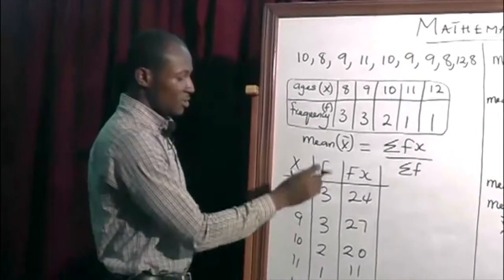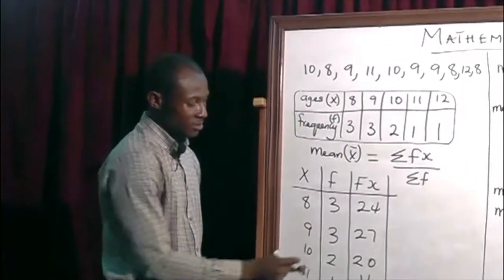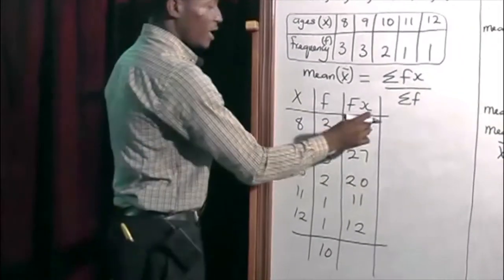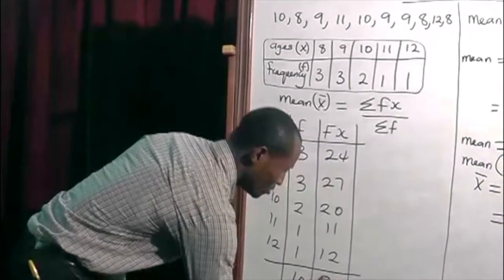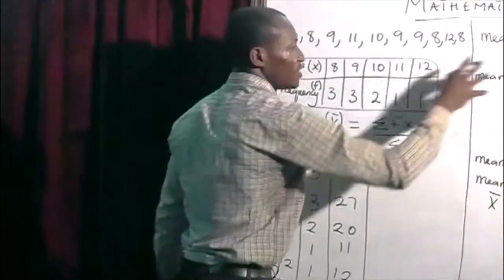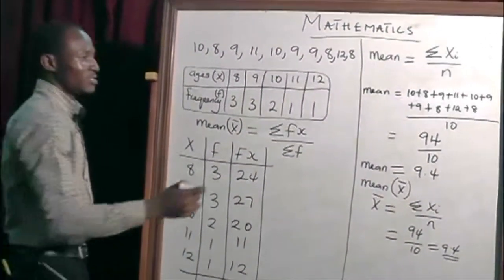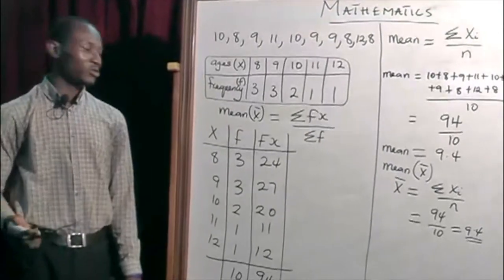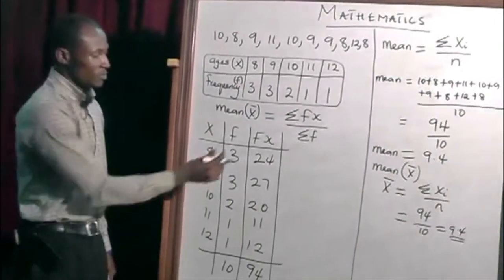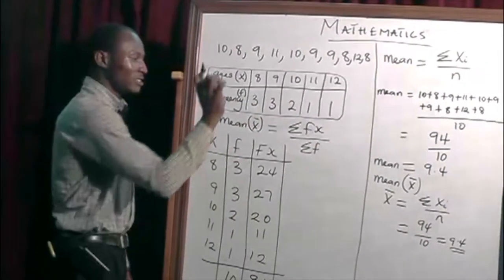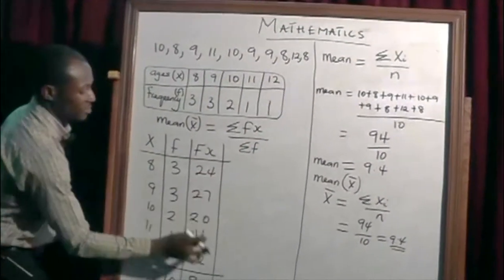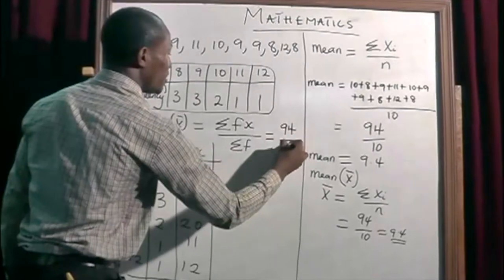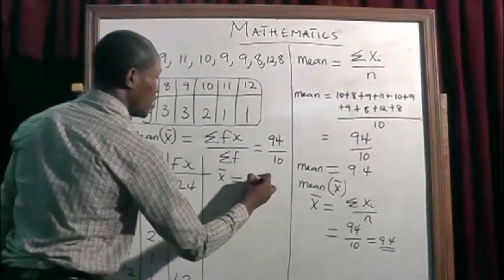Adding the frequencies: 3 plus 3 is 6, plus 2 is 8, plus 1 is 9, plus 1 is 10. So summation f equals 10. Adding all the fx values gives us 94. So the mean is 94 divided by 10, which is 9.4. There is no difference in the final answer between this method and the direct method — it's just that the frequency table presents data more neatly.